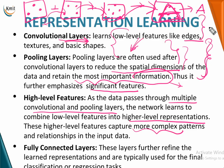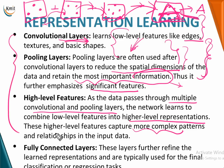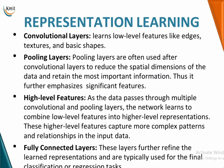That is how the model learns to extract features from image data and produce a suitable output. At the end, a fully connected layer refines the learned representation for the final task — whether classification or regression. That is how representation learning works.